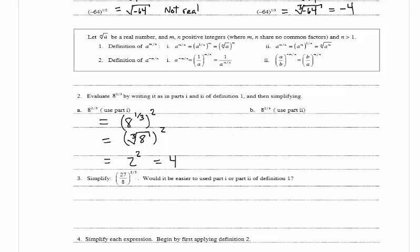For part 2, we rewrite 8 to the 2 thirds as 8 squared raised to the 1 third. We can write that as the cube root of 8 squared, and 8 squared is 64, so we have the cube root of 64 which equals 4. Regardless of which method we use, we get the same answer.